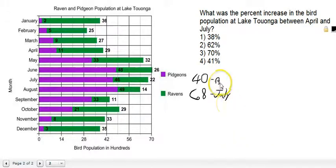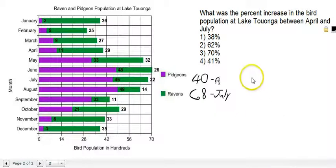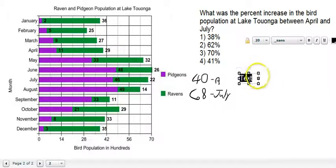So that's April and July. Now, if you don't know, here is the formula for finding the percent increase — or for that matter, the percent decrease. The percent increase formula is the difference between the new number and the original number divided by the original number. So I'm just going to type that out: the difference between the original number and the new number.